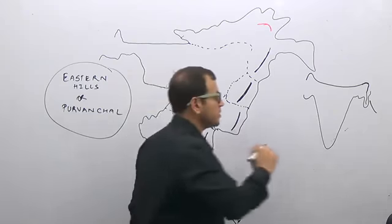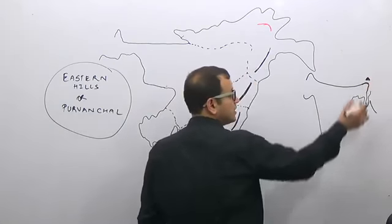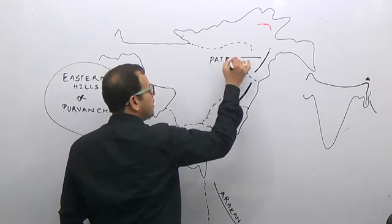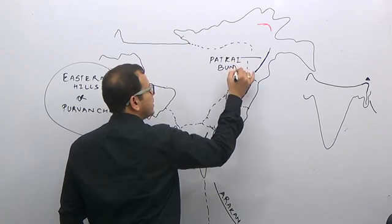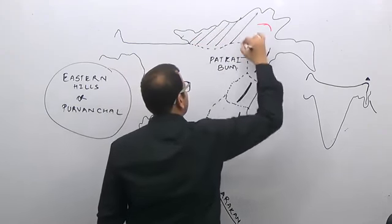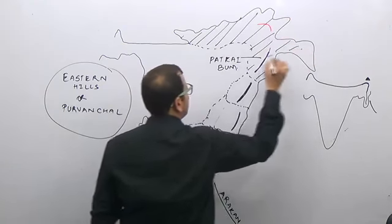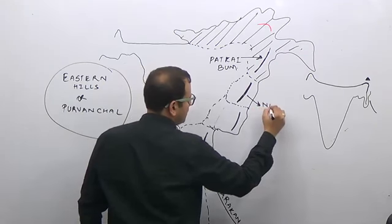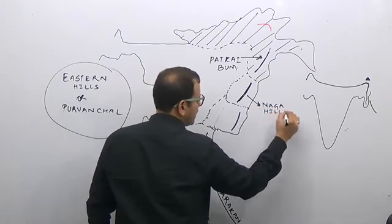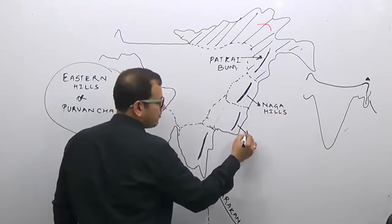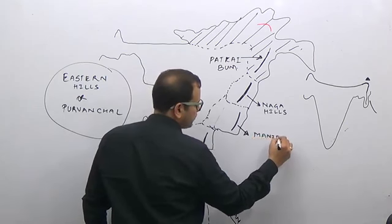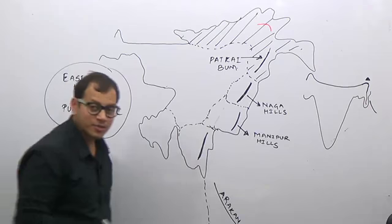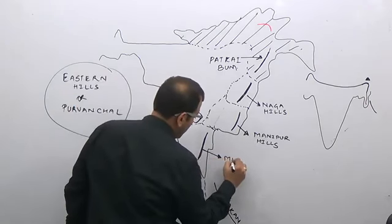After taking a sudden southward bend from Namcha Barwa, the Himalayas continue and are known by different names. In Arunachal Pradesh, they are known as Patkai Bum or Patkai Mountains. In Nagaland, they are known as Naga Hills. In Manipur, they are known as Manipur Hills. In Mizoram, the southernmost state, they are known as Mizo Hills.